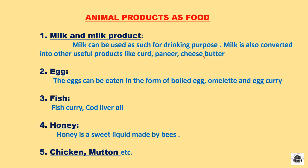Animals are also a source of food and we get many food products from them. We get milk from animals, which is also converted into many useful products like curd, paneer, cheese and butter. We also get eggs from animals. The main dish of coastal regions is fish, and cod liver oil is also prepared from fish. The honey we use in many dishes is made by bees, and we also get chicken, mutton, etc. from animals.